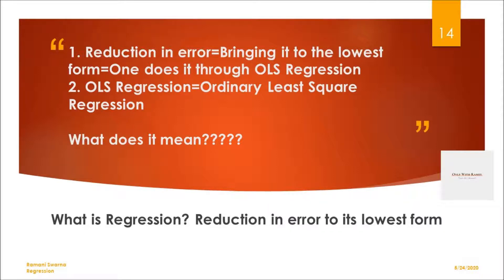Now I'm coming to the second form of regression. If you have followed those parameters one by one and you have come over to the errors, and you are seeing that yes you are questioning whether you can eliminate them — your observation tells you that rather than eliminating, you need to reduce them. You cannot eliminate them; you need to reduce it. Now you have to go ahead with the OLS regression. OLS stands for Ordinary Least Square regression.